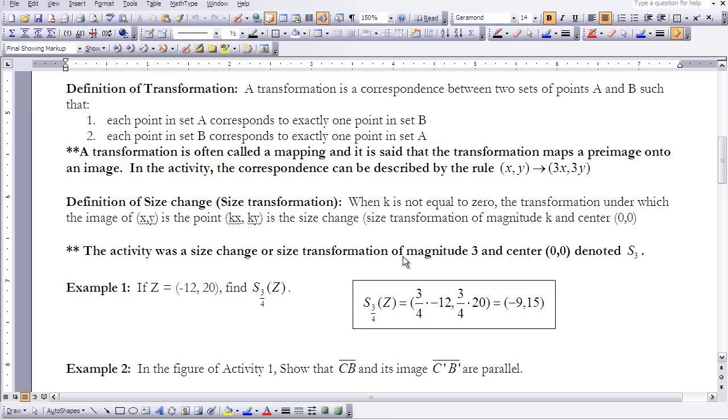So let's take a look at example one here. If I have a point Z, and I want to find a size change of a factor of 3 over 4, so that means I'm going to take the point, negative 12, 20, which was my Z, and I'm going to multiply both those coordinates times 3 fourths. So a negative 12 times 3 fourths gives me a negative 9, and a 20 times 3 fourths would give me 15. So that's where I would put Z prime, or my new image, Z.